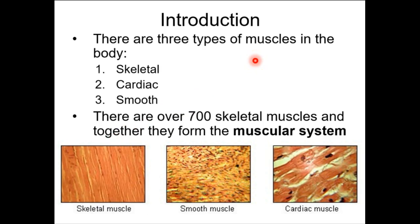We already recall that you have skeletal, cardiac, and smooth muscle. Histologically, they have slightly different appearances. There are very many skeletal muscles, but by comparison our list is very short. We do not have 700 muscles to learn for your next lab practical — it's about three pages instead. Much more manageable.